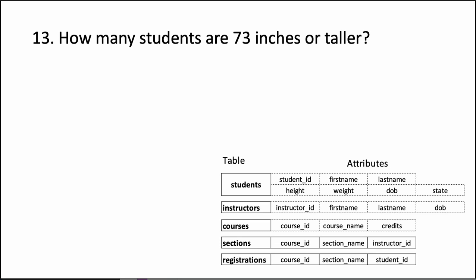Here we are asking how many students are 73 inches or taller. What we really want to do is take the students table, consider only those students who are 73 inches or taller, height greater than or equal to 73.